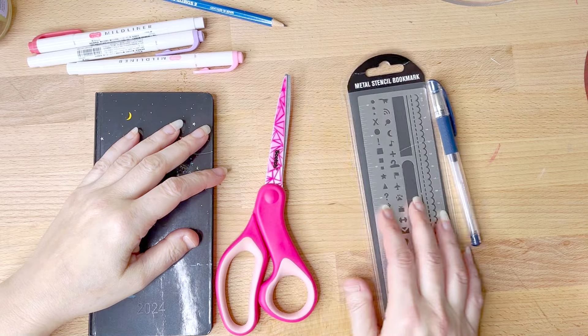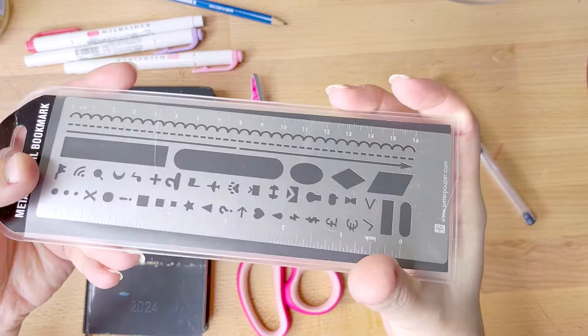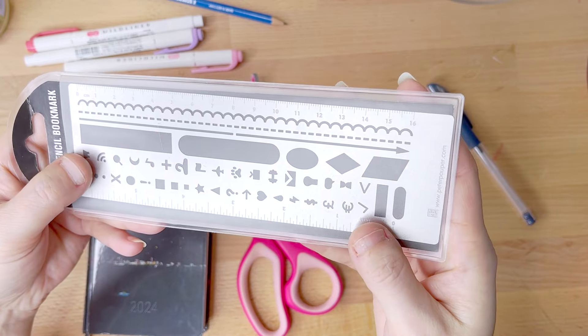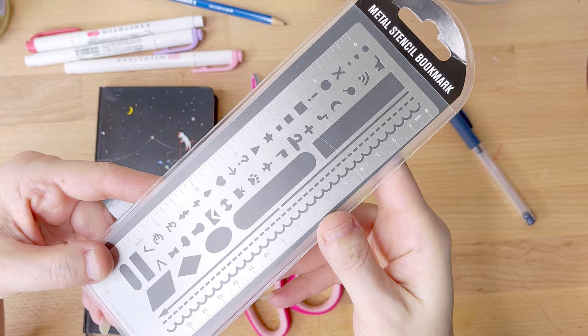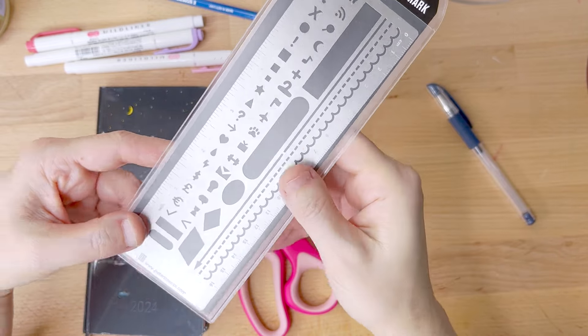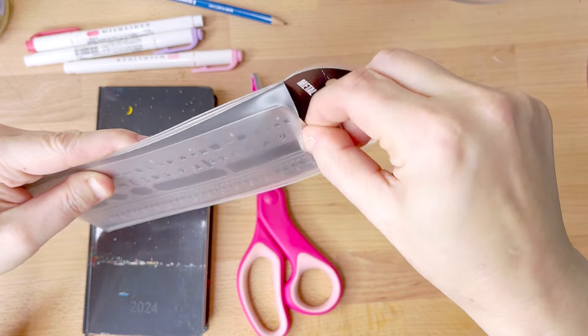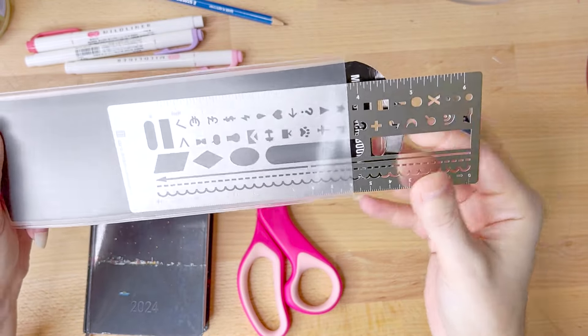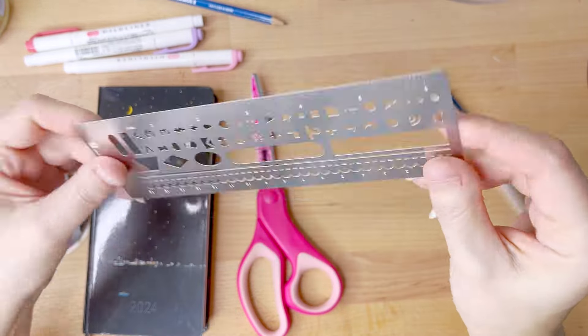Hello everyone and welcome back to my channel. Today I thought I would share with you this metal stencil bookmark that I ordered. It's made by Peter Popper Press and I wanted to give it a go for my journaling because I thought a lot of the stencils would be useful for me. So let's test it out and see how well it works on paper.